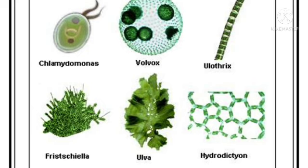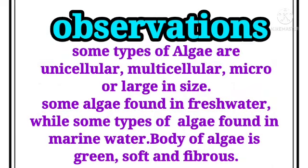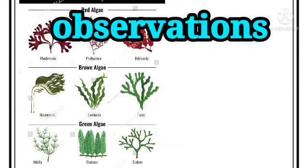Examples of algae: some types of algae are unicellular, multicellular, micro, or large in size. Some algae are found in fresh water while some types are found in marine water. The body of algae is green, soft, and fibrous.